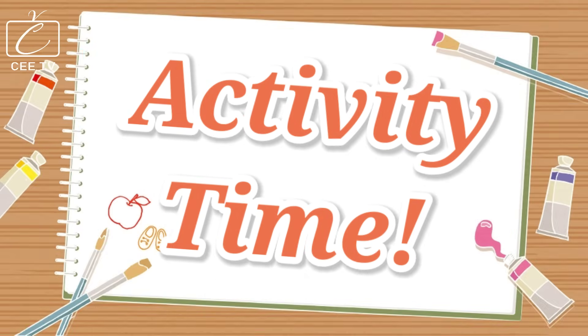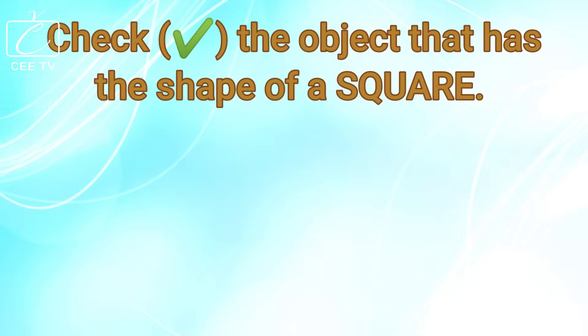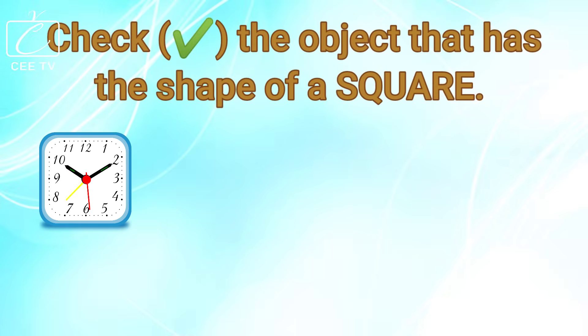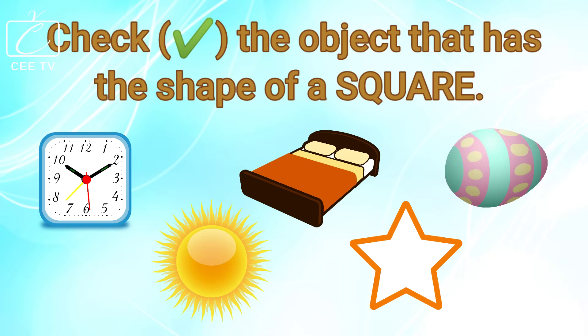Activity time! Check the object that has the shape of a square. The clock has the shape of a square. Great job! The clock has the shape of a square.